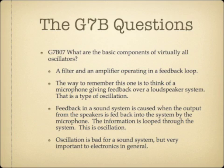What are the basic components of virtually all oscillators? Virtually all oscillators consist of a filter and an amplifier operating in a feedback loop. Think of a microphone giving feedback over a loudspeaker system — feedback is a type of oscillation. The information gets looped through the system over and over again, and this looping is oscillation. What you're looking for is a filter and an amplifier operating in a feedback loop.